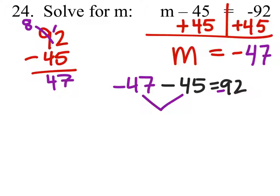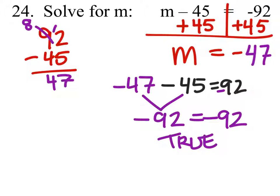And when I combine these—by the way, that was a negative 92, I apologize. When we combine those, we get negative 92 equals negative 92. That's true. Since it's true, we know that M equals negative 47 is the correct answer.